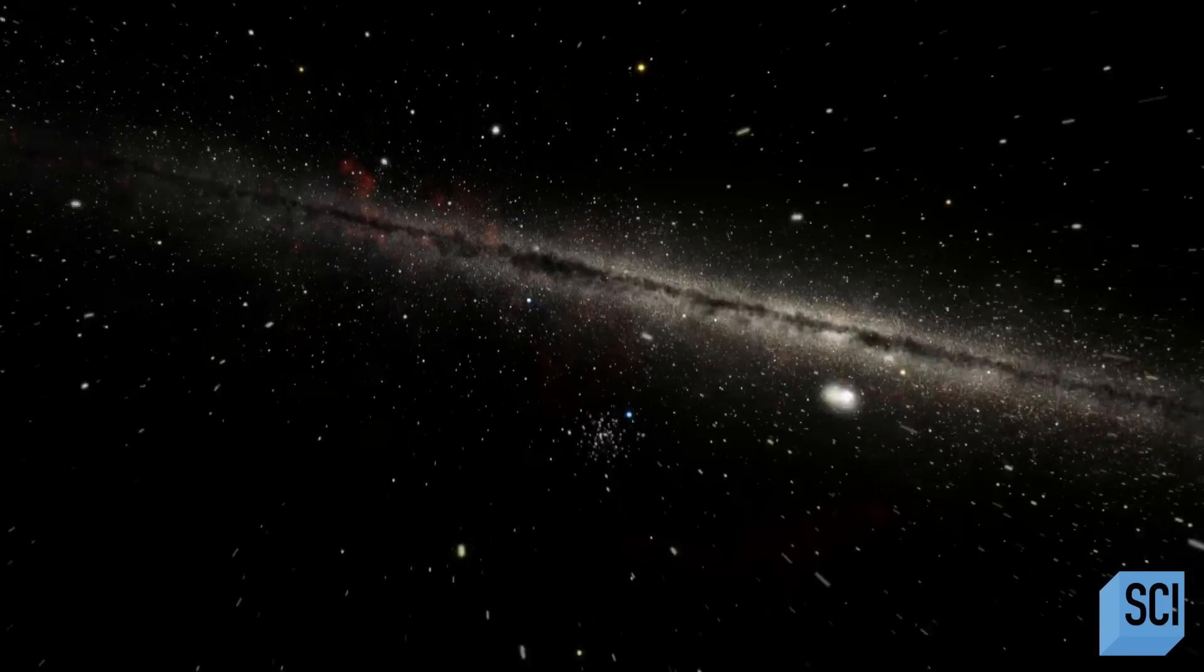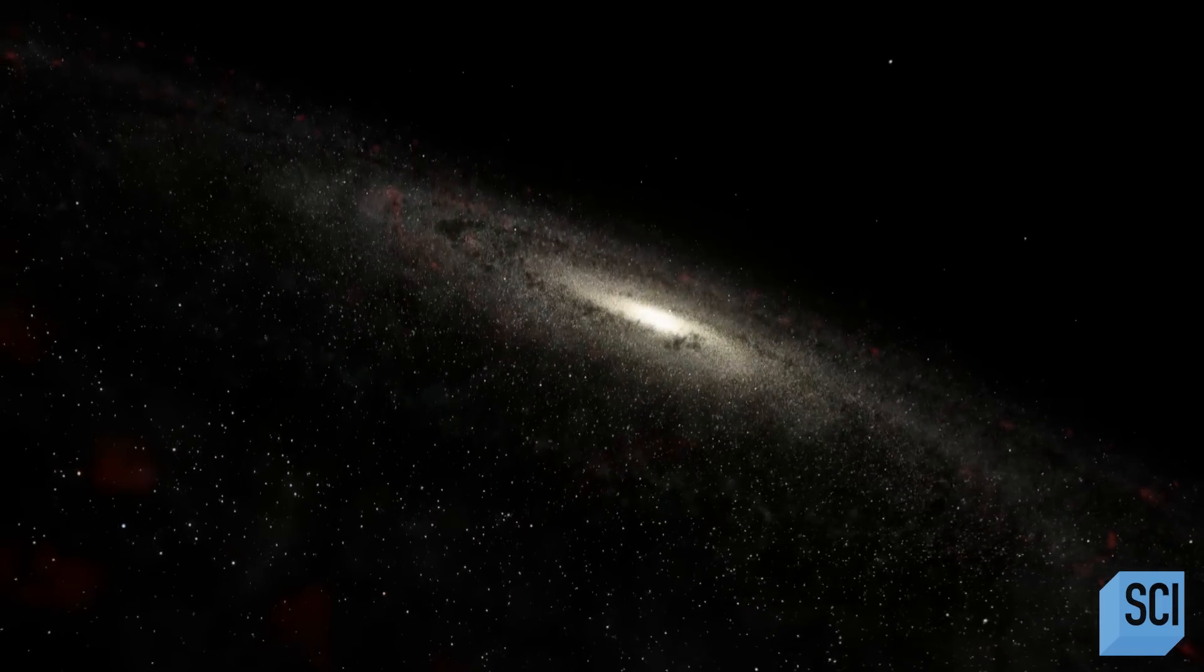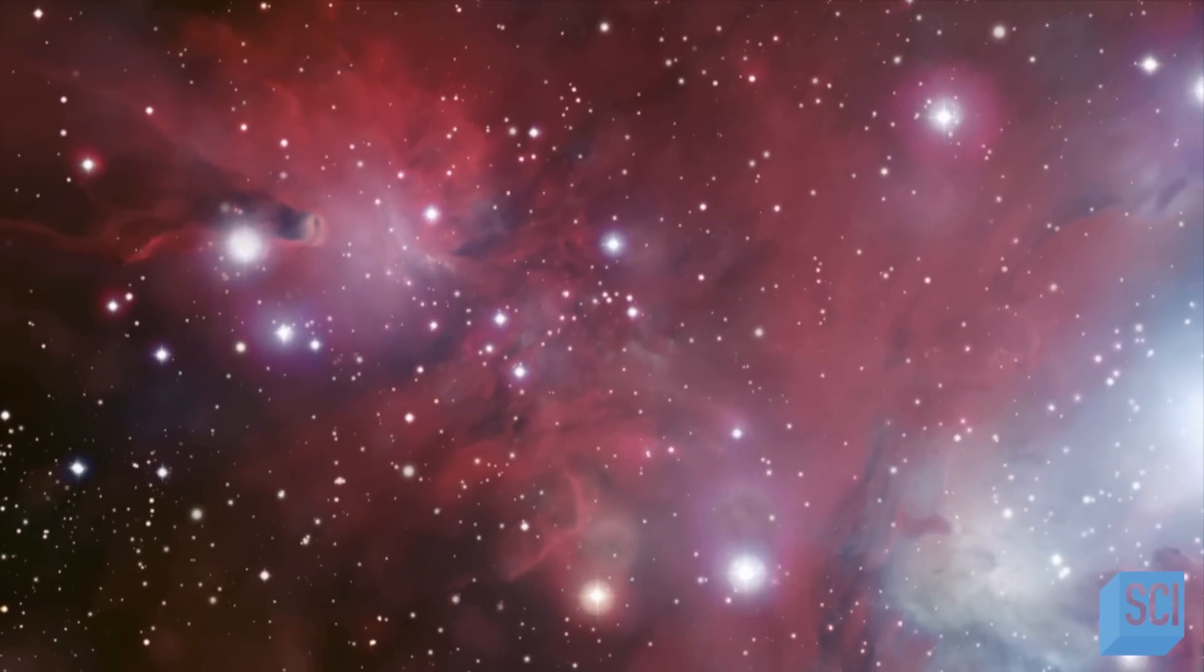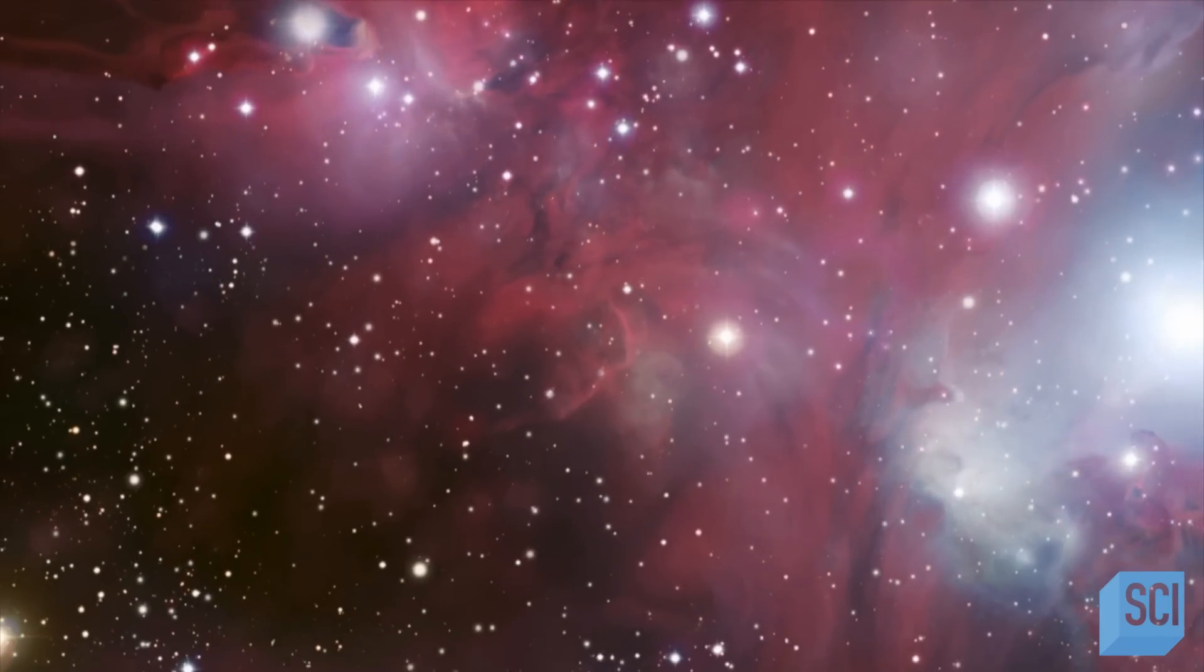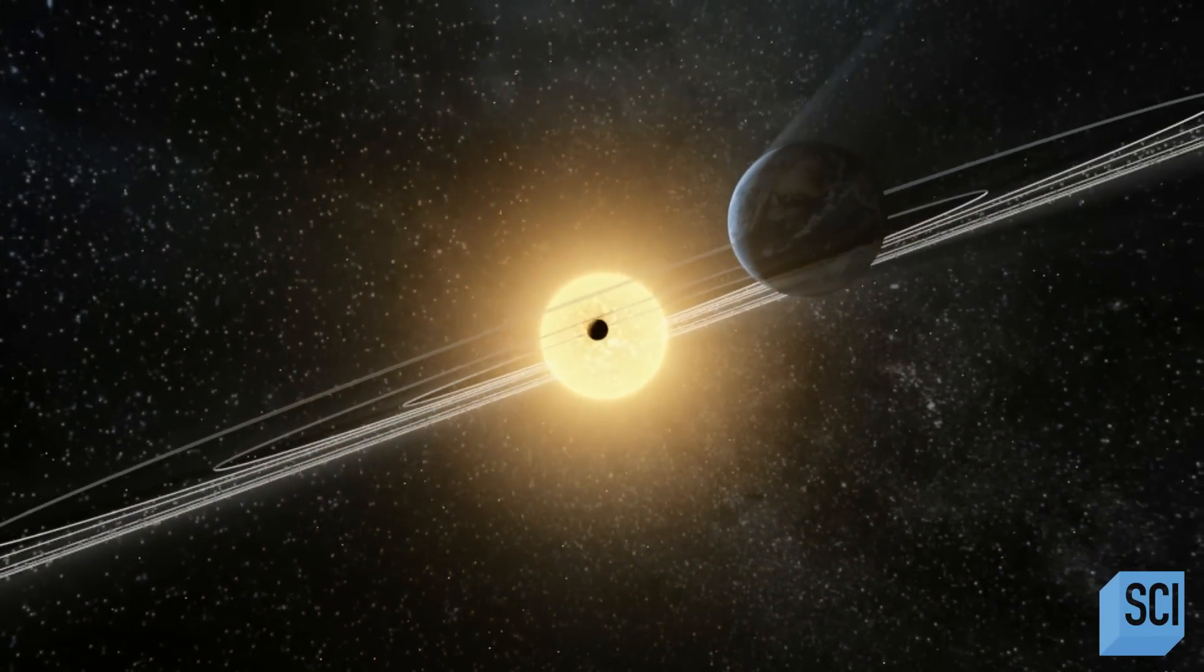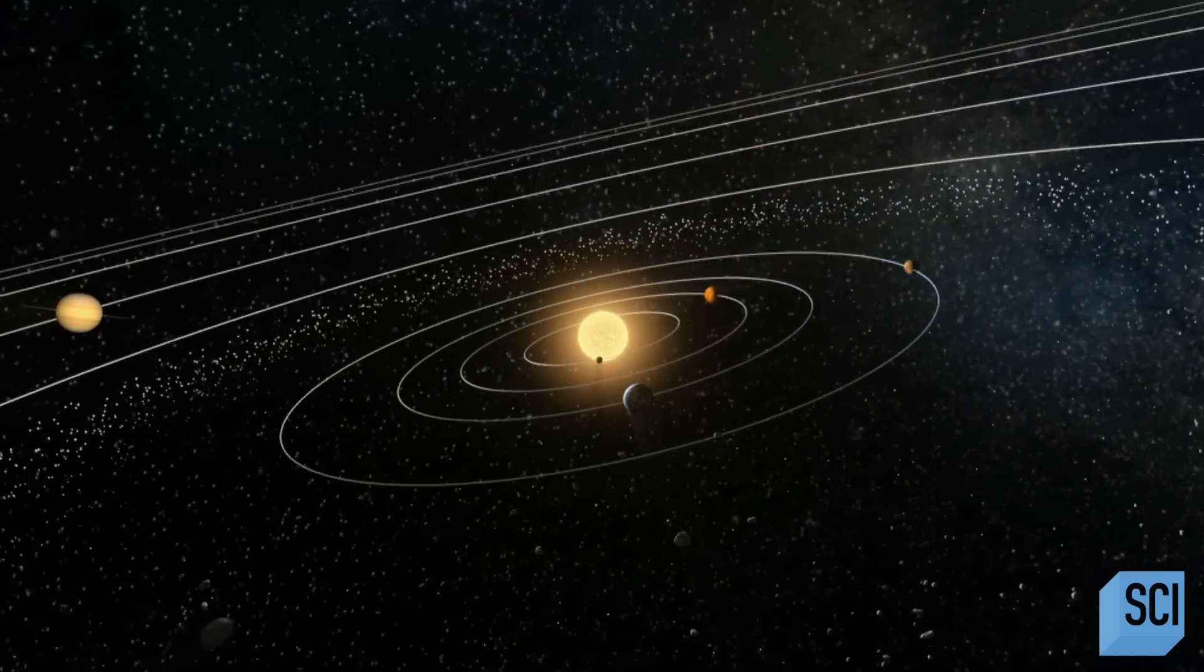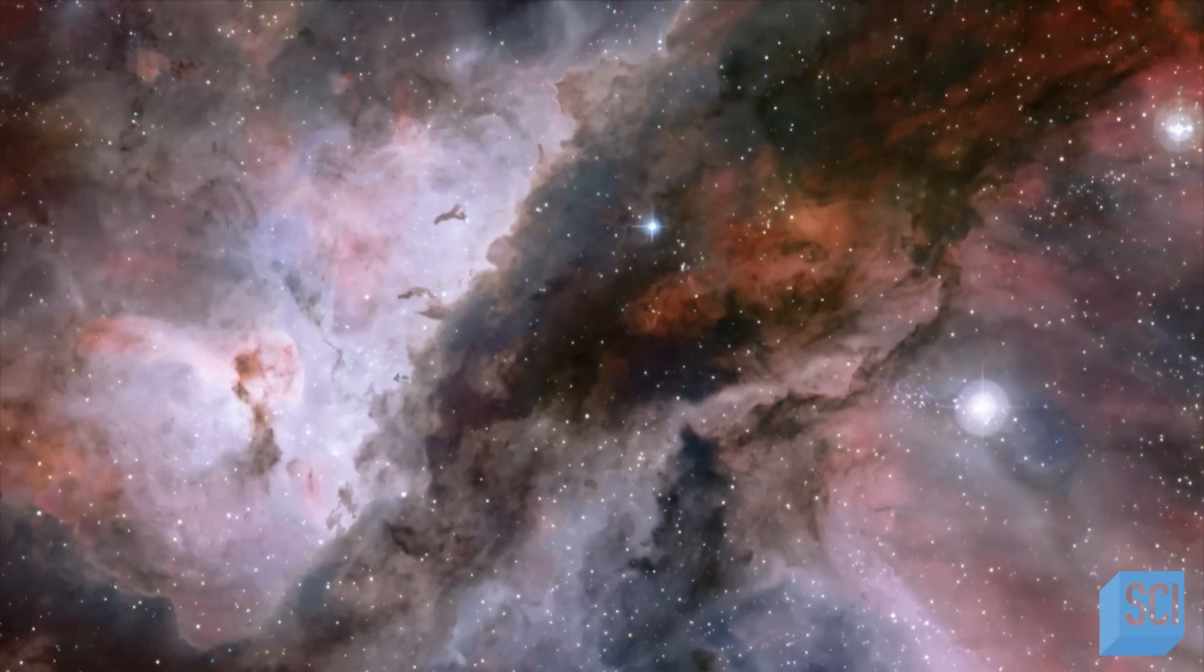Thanks to the Kepler mission, we now know that there are tens of billions of planets orbiting stars in our galaxy alone, and we know that there are billions of galaxies across the universe. So if in just one planetary system like ours, life arose on one planet and there are at least four more candidates, the likelihood of finding a planet in outer space that could harbor life should be very high.